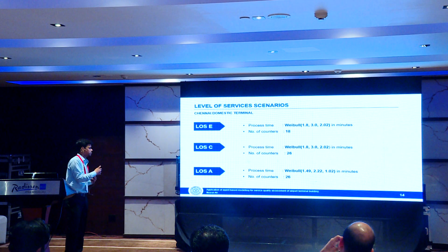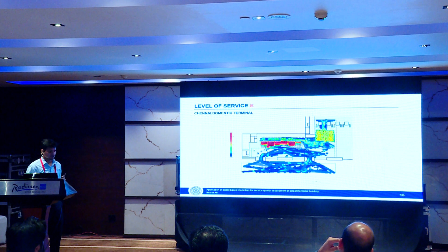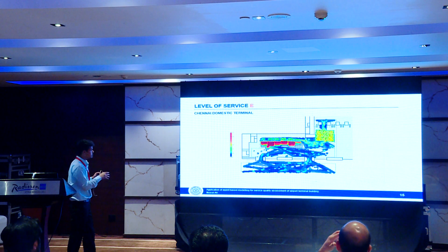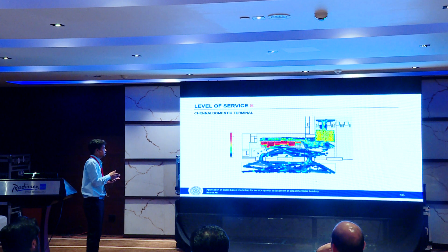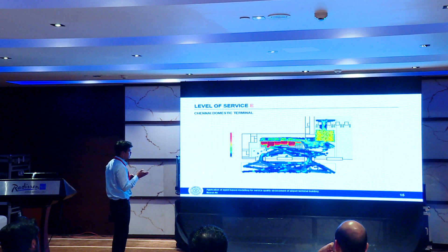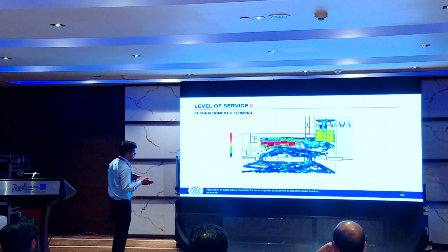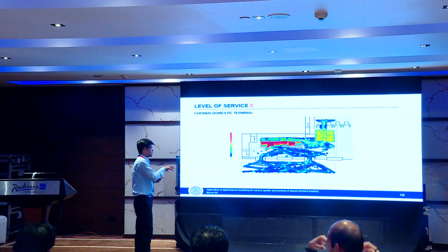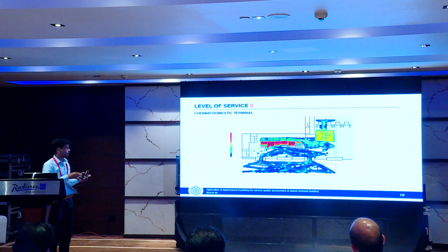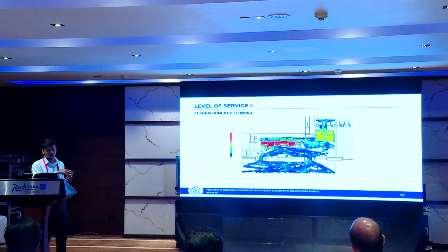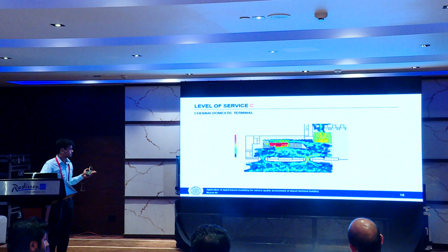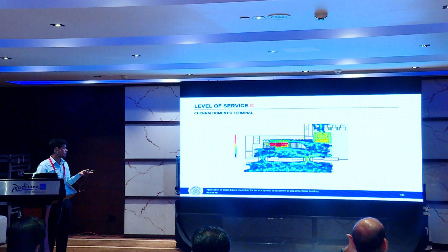If we keep the number of counters the same and decrease the process time, we move to level of service A. In level of service E, multiple counters are operating simultaneously, which also creates air quality problems — many people breathing and emitting CO2 at the same time, affecting passenger comfort. In level of service E, only three consecutive counters are working at the same time.